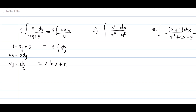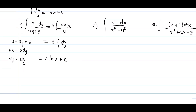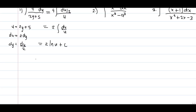Don't forget the formula: the integral of du over u equals ln u plus C. Substituting the equivalent of u, we therefore have 2 ln(2y plus 5) plus C. That is the final answer.